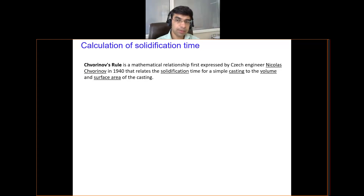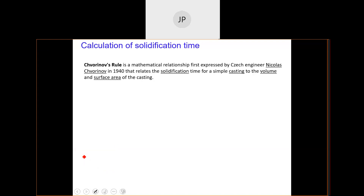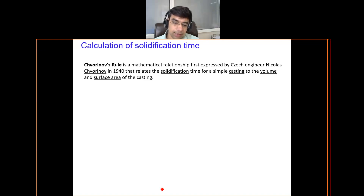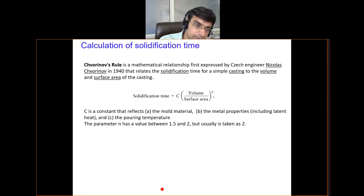We have a mathematical relationship developed by engineer Nicholas Chvorinov. We call this relation Chvorinov's rule. This rule gives us the time in which a casting gets solidified, and it is basically related to the volume of the casting and the surface area of the casting. Additionally, there is another constant in this relationship known as the mold constant. Chvorinov's rule states: solidification time equals C times (Volume/Surface Area) raised to power n.